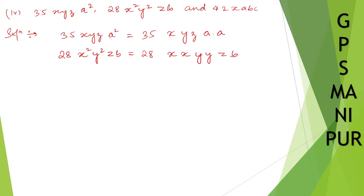So y squared is y into y and x squared is x into x. And this is 42 x a b c. So write down 42 x a b c.